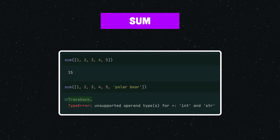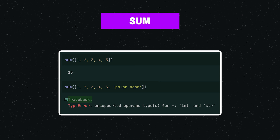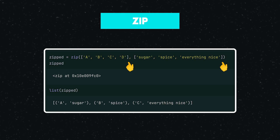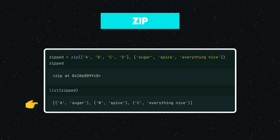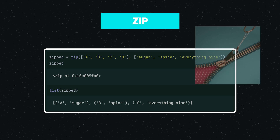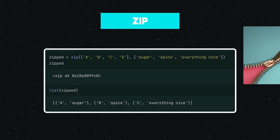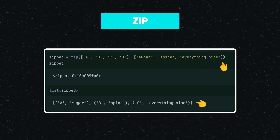`sum()` adds up all elements in an iterable and returns the total. `zip()` is another favorite of mine — it allows you to iterate over several iterables in parallel, producing tuples containing one item from each iterable. To visualize zip's output, imagine a zipper that you'd find on your clothing; it brings two different parts together. If the provided iterables differ in length, the shortest iterable determines the length of the output.